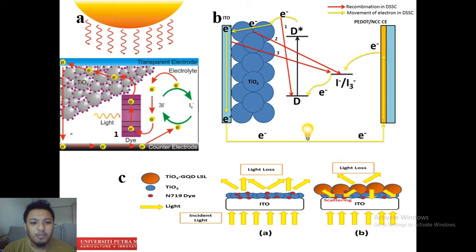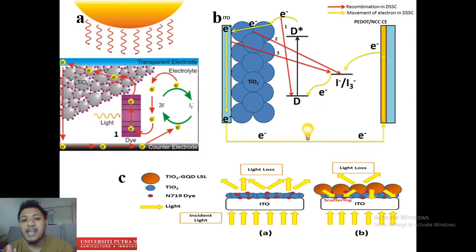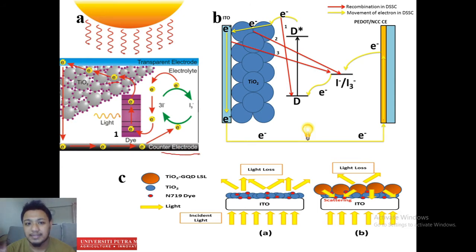The electron travels and goes to the counter electrode. During transfer of the electron at the TiO₂ photo anode, an electron-hole junction is created — when one electron jumps, it creates a hole. The alternating positive and negative charges create a junction which produces a voltage, and the moving electron creates a current. The electron then moves to the counter electrode.